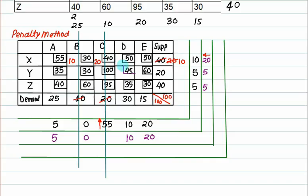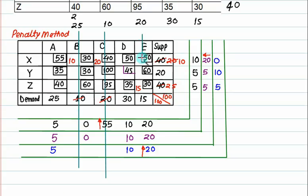Starting the next iteration: penalties are 55, 50, and 50. For 50 and 50, the penalty is 0. For 35, 45 and 60, the penalty between 35 and 45 is 10. For 40, 35 and 30 — 30 and 35 gives penalty 5. There is no entry in several columns. The maximum penalty is 20. The lowest cost in that row is 30, so we can allocate 15, leaving 25. Column E is also cancelled.